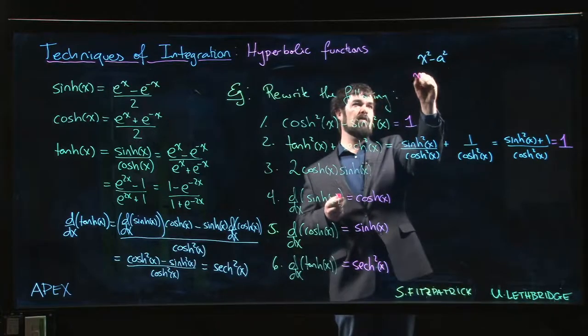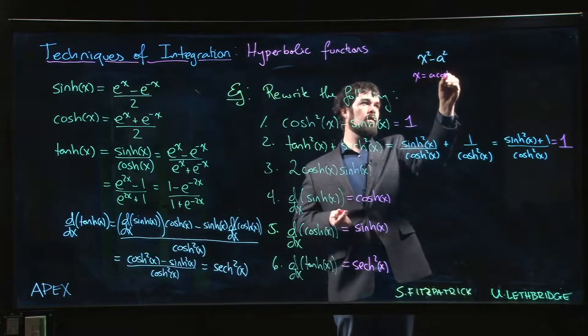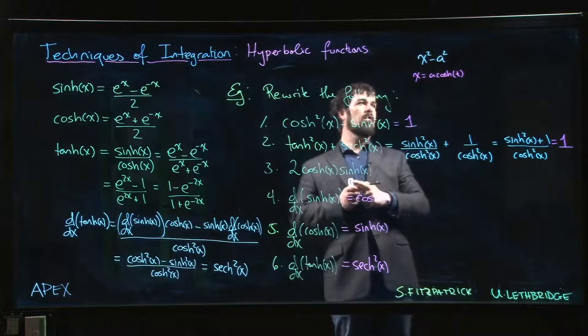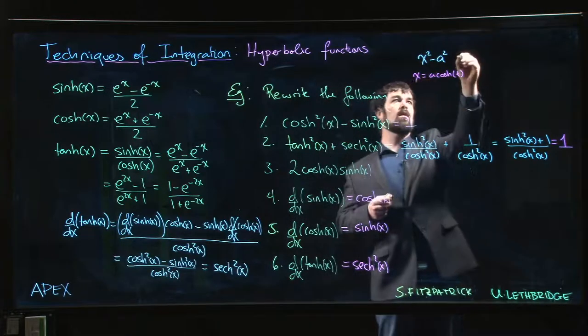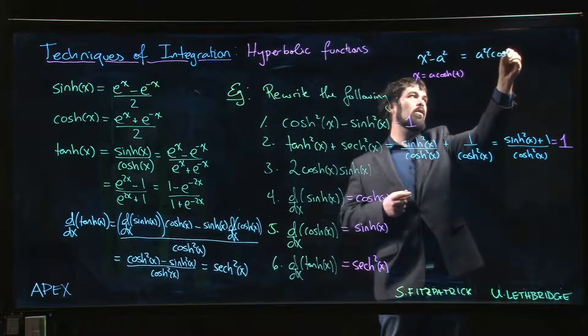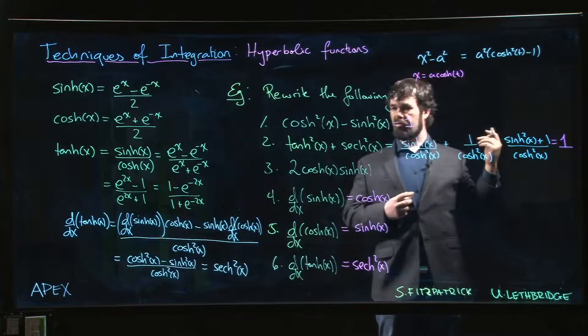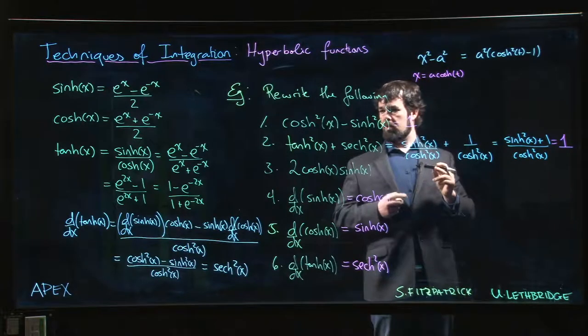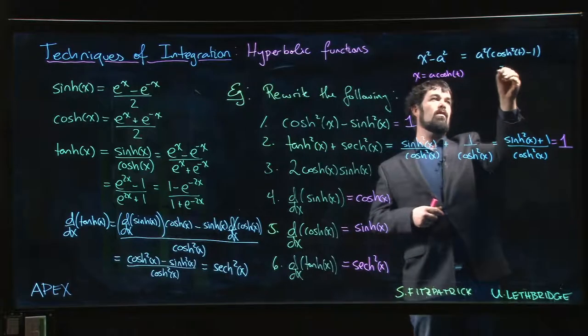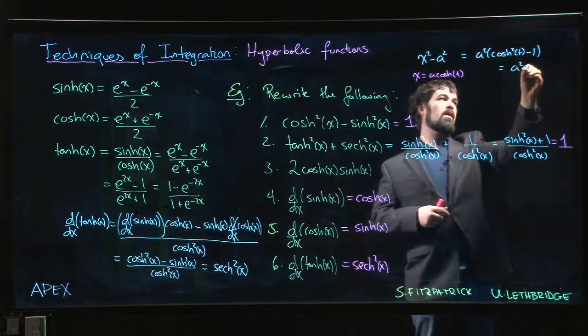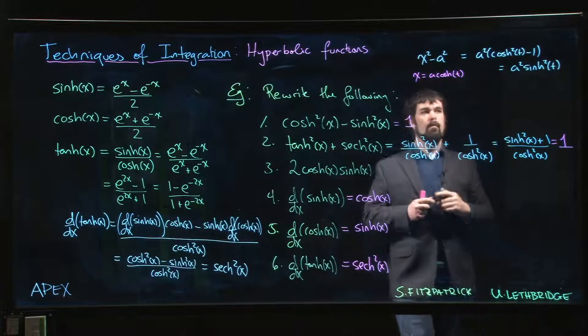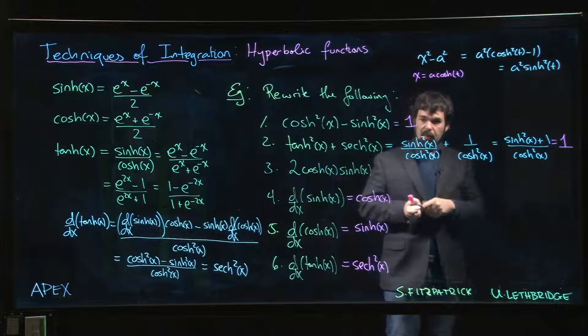I put x is equal to a times, let's say, cosh t? Well then this becomes a squared times cosh squared t minus one. Bring that one over, bring the sinh to the other side - this is the same thing as a squared sinh squared t. So we can play games like that.